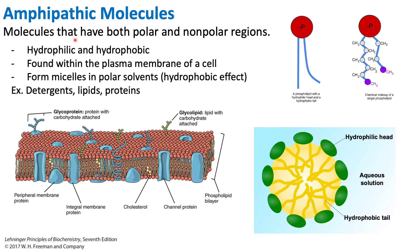So to summarize: amphipathic molecules are simply molecules that have both polar and nonpolar regions. A very simple example is a phospholipid, which has a polar region and a nonpolar region. They are important in regards to the hydrophobic effect and the formation of micelles, and they are important in our cell membranes.